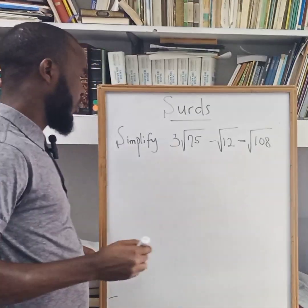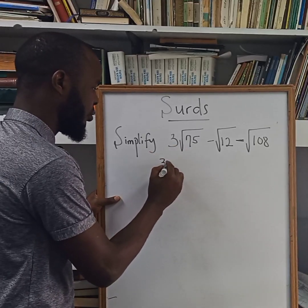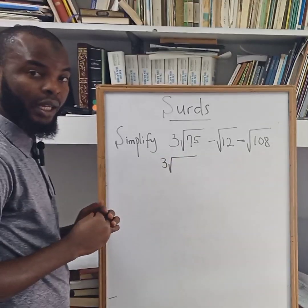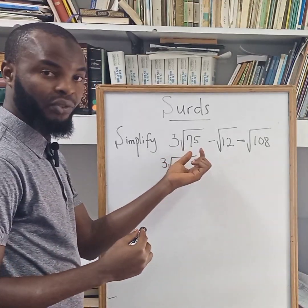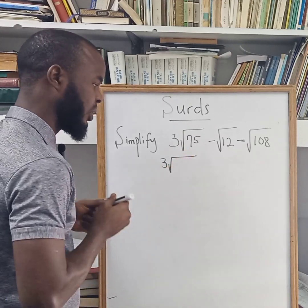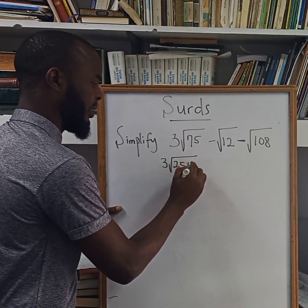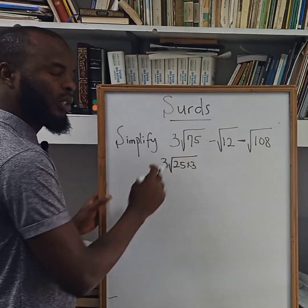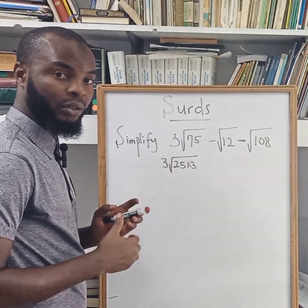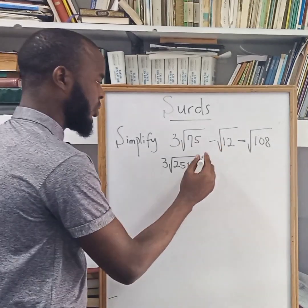For us to do this, we can simplify further by rewriting each term in the form root(a × b). We're going to look for a perfect square and another number to form 75. Looking at the maximum perfect square that can go into 75, it is 25 multiplied by 3 — 25 times 3 gives us 75. A perfect square is a number that gives you an exact whole number when you find the square root.